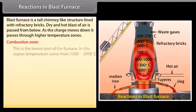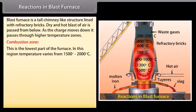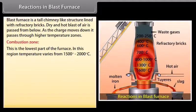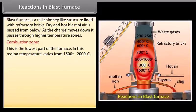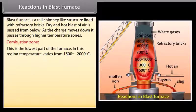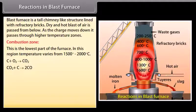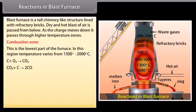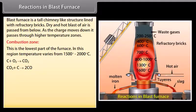Combustion zone. This is the lowest part of the furnace. Here, coke burns in hot blast of air. In this region, temperature varies from 1500 degree to 2000 degree Celsius. Carbon dioxide rises upwards and meets with red hot coke.